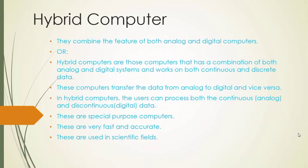Hybrid computer: Hybrid computers combine the features of both analog and digital computers. They have a combination of both analog and digital systems and work on both continuous and discrete data. These computers can transfer data from analog to digital and vice versa. Users can process both continuous analog and discontinuous digital data.